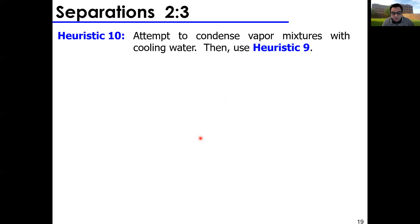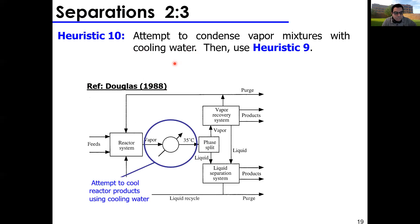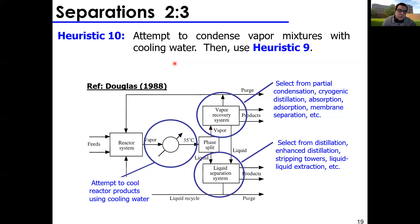You should not try to separate a gas mixture while keeping it within the gas phase — even in reverse distillation, one component will have to drop to a liquid phase. So heuristic ten: if separating a gaseous mixture, you must condense it somehow. Cooling water is cited as cheapest, but you can also use cryogenics or Joule-Thomson cooling. Then select from partial condensation, cryogenic distillation, absorption, or membrane separation. For liquids, use distillation, enhanced distillation, stripping, or liquid extraction.